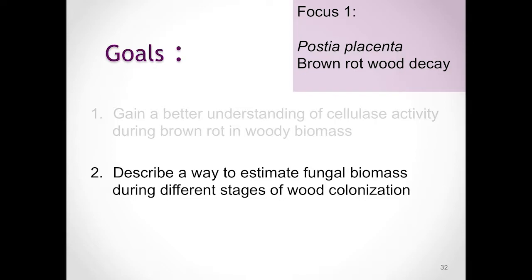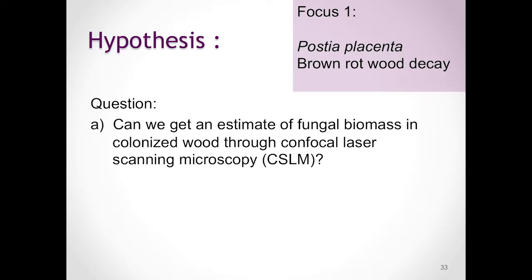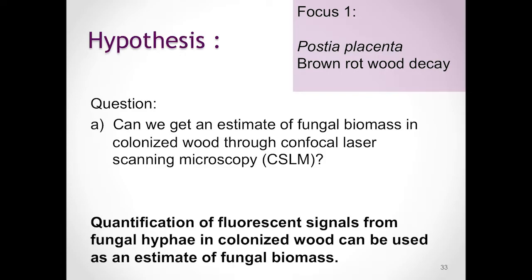Now moving to my second goal for the brown rot study: I would like to devise a better way to estimate fungal biomass for each stage of brown rot decay. I'm questioning whether confocal laser scanning microscopy could be used to come up with an estimate of fungal biomass. Specifically, this leads to my hypothesis: if we place a fluorescent signal specific to fungal chitin onto our system, can we quantify fungal hyphae in colonized wood and thereby estimate the overall amount of fungal biomass?